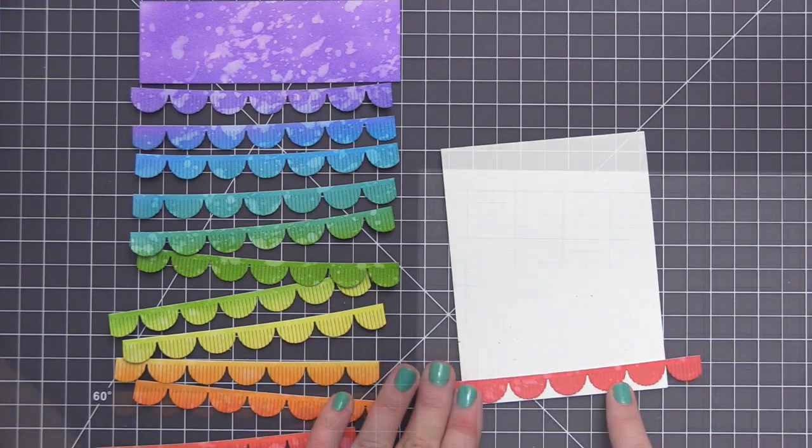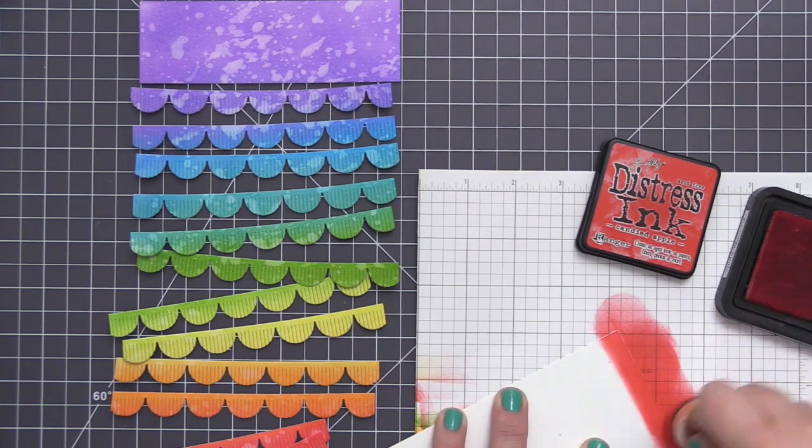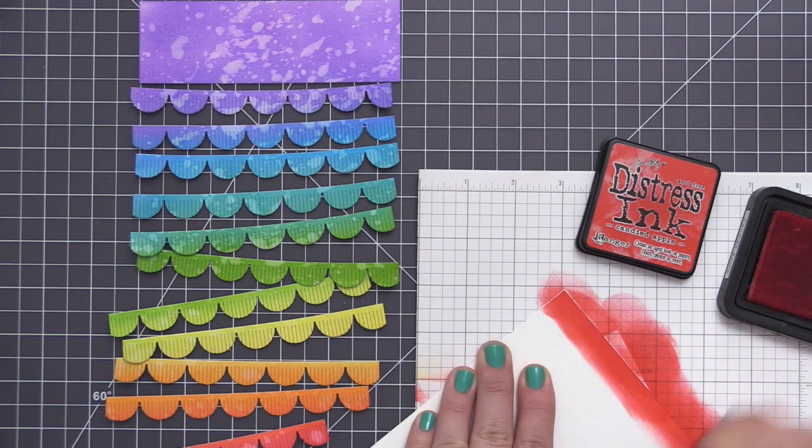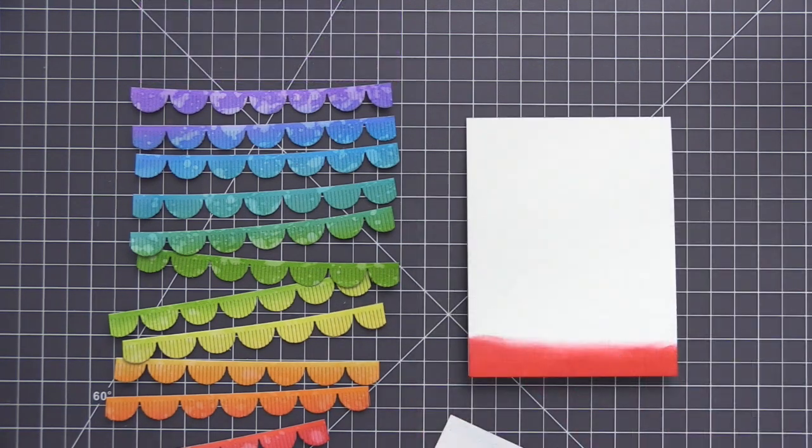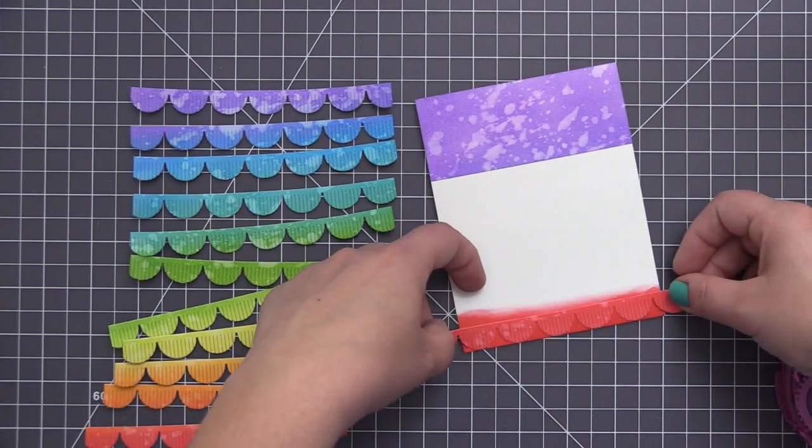Now you can see here when I add the scallop to the card front, you're going to be able to see that white from the card base underneath that very bottom scallop. So I want to make sure that I have color on there so that it all looks continuous. So I'm taking the exact same color of red that I used to do the little fringe scallop and I just added that red color to the bottom.